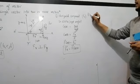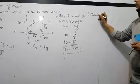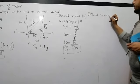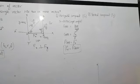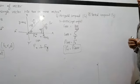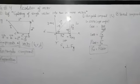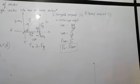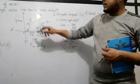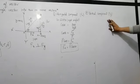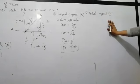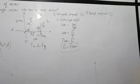Now I am going to tell you about the vertical component. You have the next heading: vertical component. The component of a vector which is along the y-axis is called the vertical component.